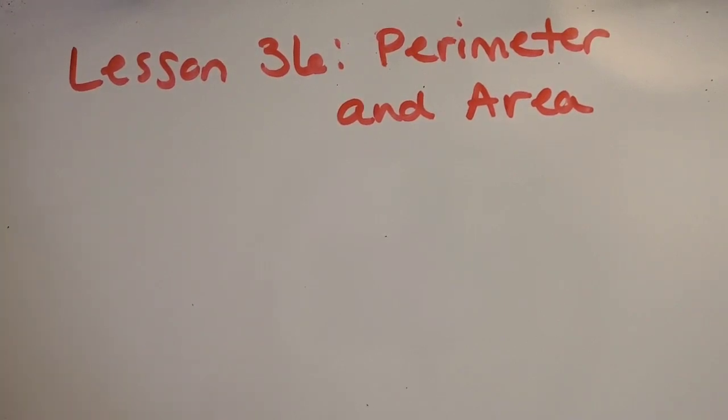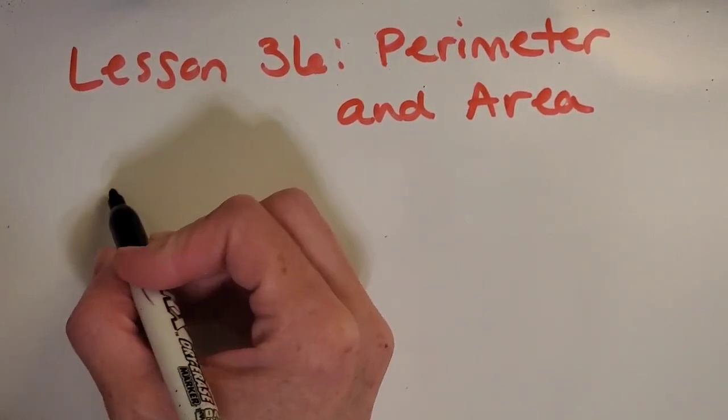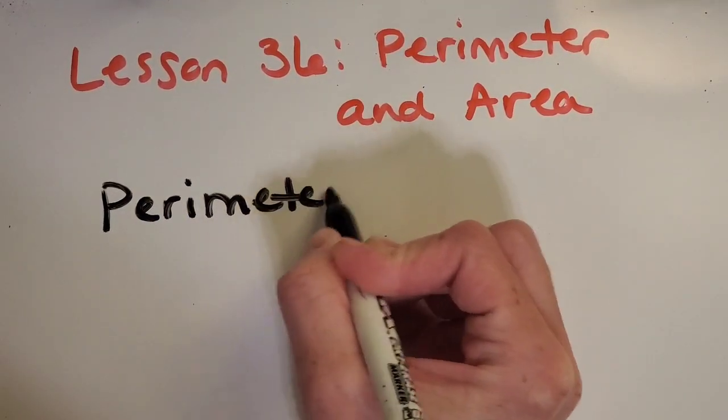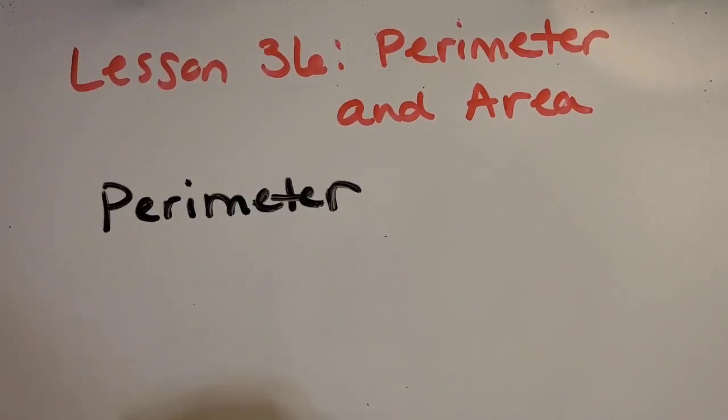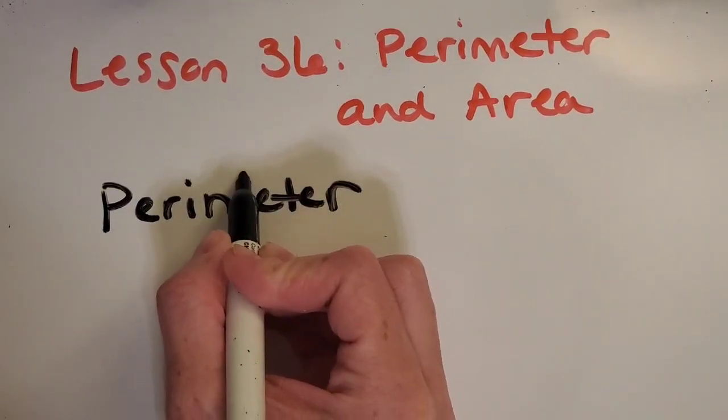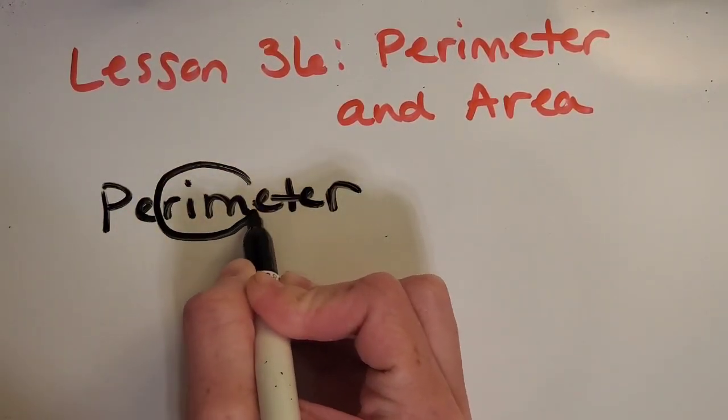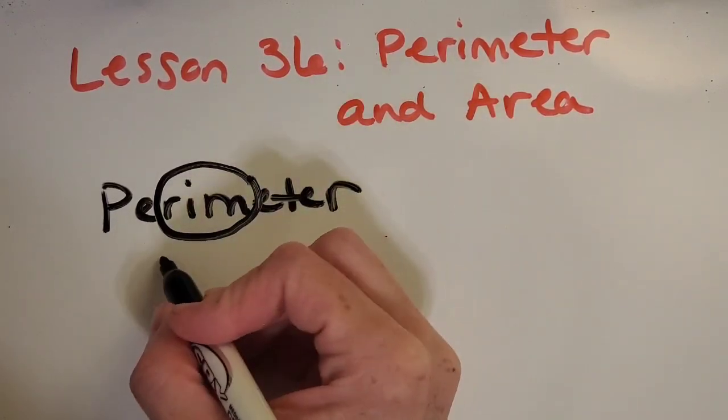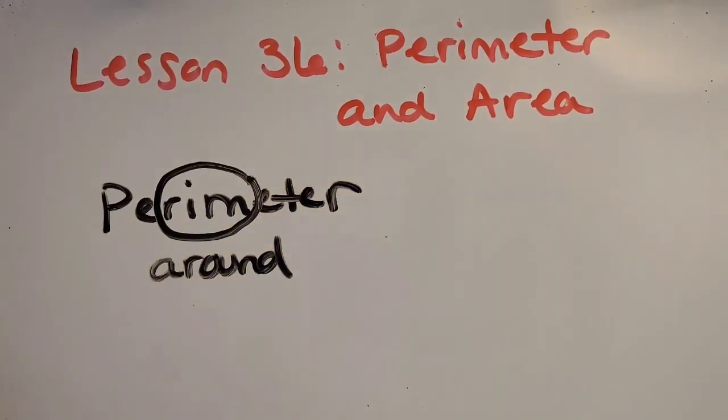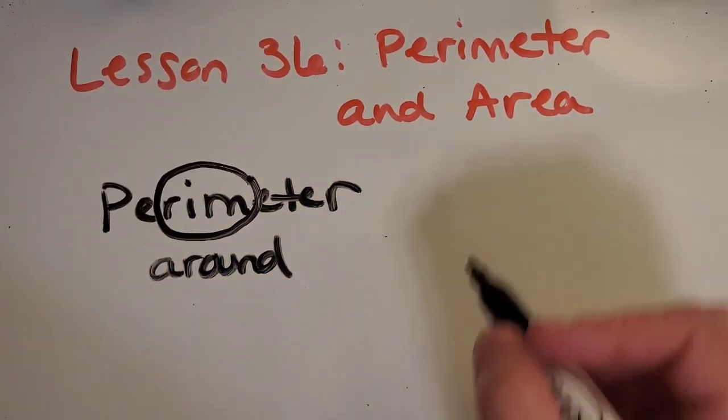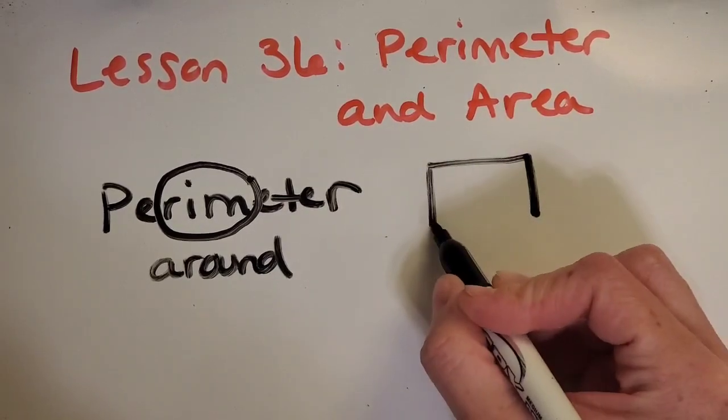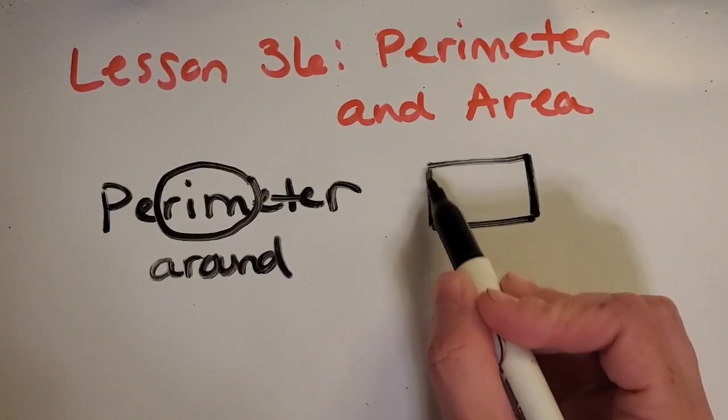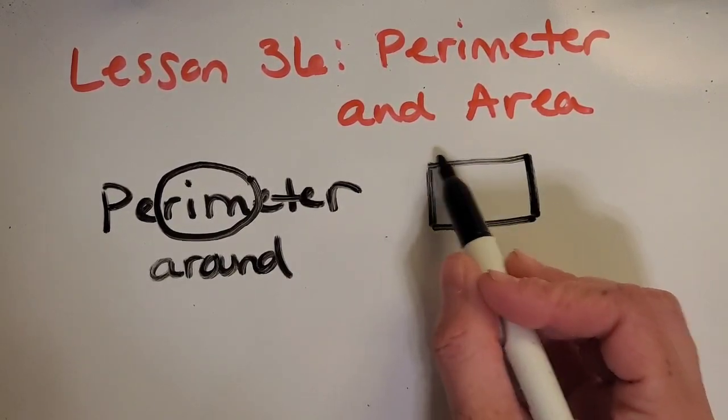Before we get started on some problems, I want to talk a little bit about the vocabulary words. We have the word perimeter, and I like to think of circling the word rim in that, and thinking of around. So when we're thinking of a rectangle that we want to find the perimeter of, we want to find the distance around the shape or the outside of the shape.